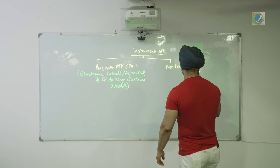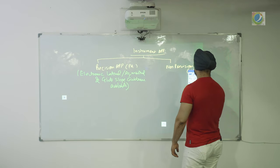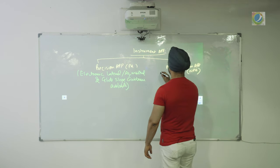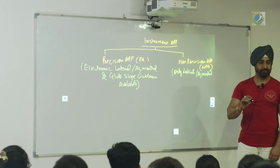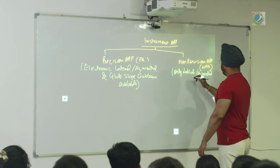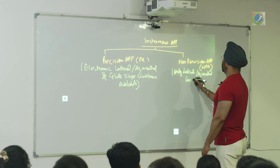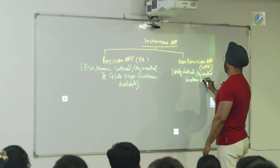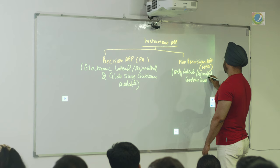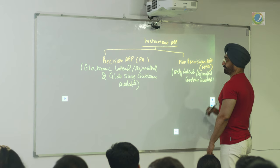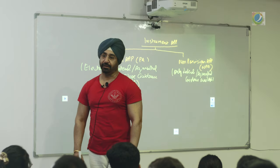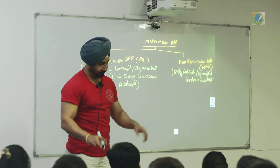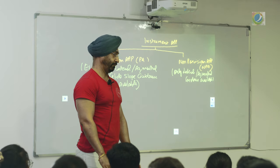Whereas in a non-precision approach, you have only lateral or azimuthal guidance available. That is the main difference between precision approach and non-precision approach. There is no third type — either it is PA or non-precision.